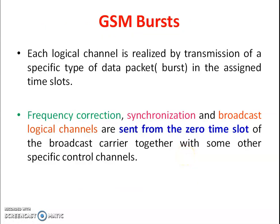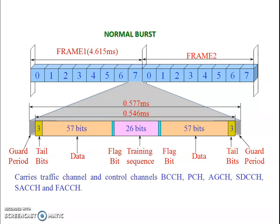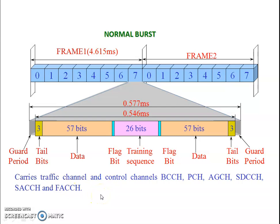Each logical channel is realized by transmission of a specific type of data packet called a burst in the assigned time slot. The frequency correction, synchronization, and broadcast logical channels are sent from time slot zero of the broadcast carrier. The normal burst carries traffic channel and control channels such as BCCH, PCH, access grant, standalone dedicated control channel, slow associated control channel, and fast associated control channel.